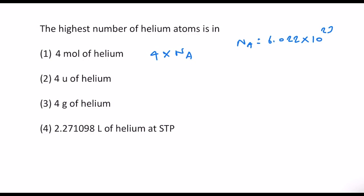In option 2, we have 4u of helium. Unified atomic mass of one helium atom itself is 4u, and this means that only one helium atom will be there.